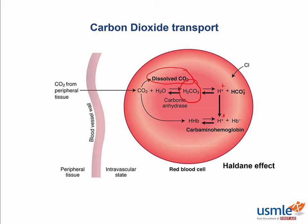This is the opposite of what happens in the peripheral tissue. Basically, the greater presence of oxygen in the pulmonary circulation causes CO2 to be released, and it can subsequently diffuse into the alveoli and be exhaled.